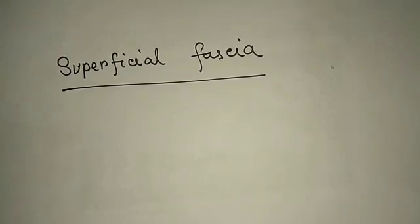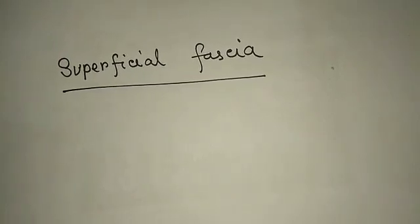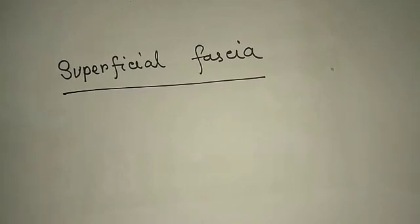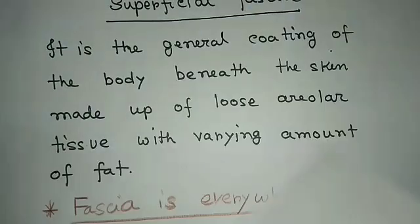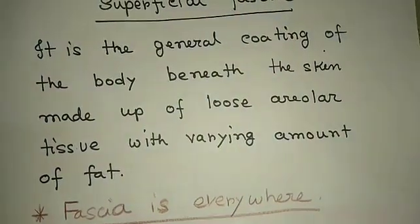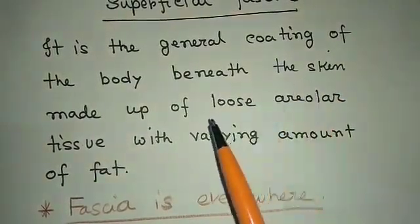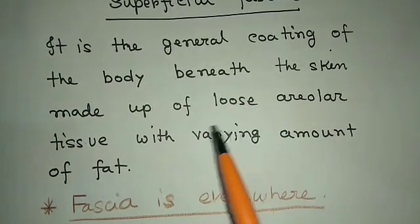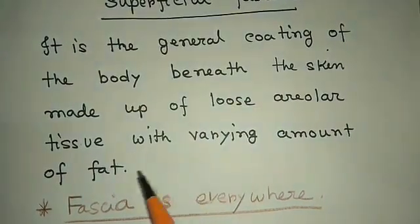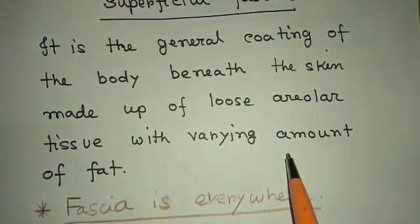Assalamualaikum, welcome all to EasyHumanAnatomy channel. Today I'd like to discuss superficial fascia. First, the definition: it's situated under the skin and is histologically formed by loose areolar tissue and fat. The amount varies according to different parts of the body, but superficial fascia is present everywhere.